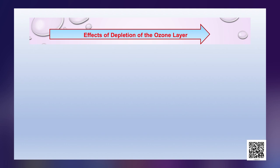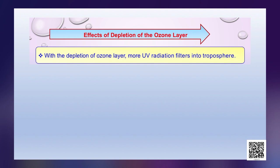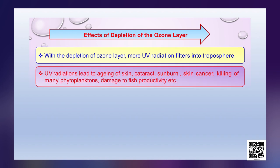Coming to the effects of depletion of the ozone layer: when the ozone layer gets depleted, more and more UV radiation filters into the troposphere. UV radiations lead to aging of the skin, cataract, sunburn, skin cancer, killing of many planktons and damage to fish productivity.